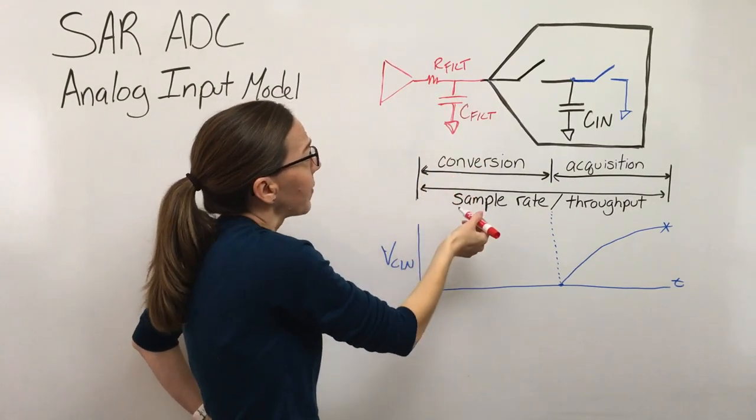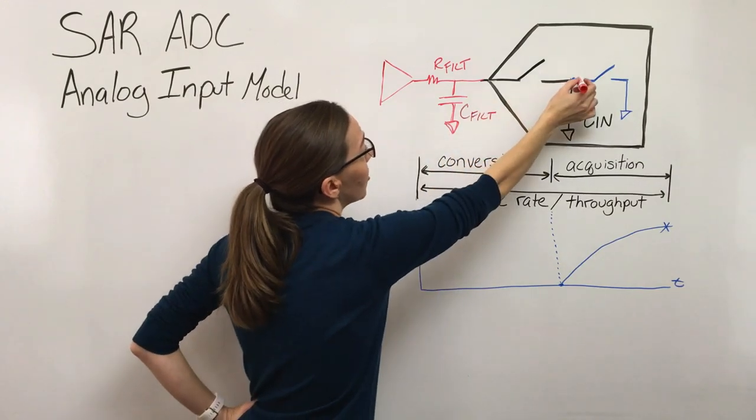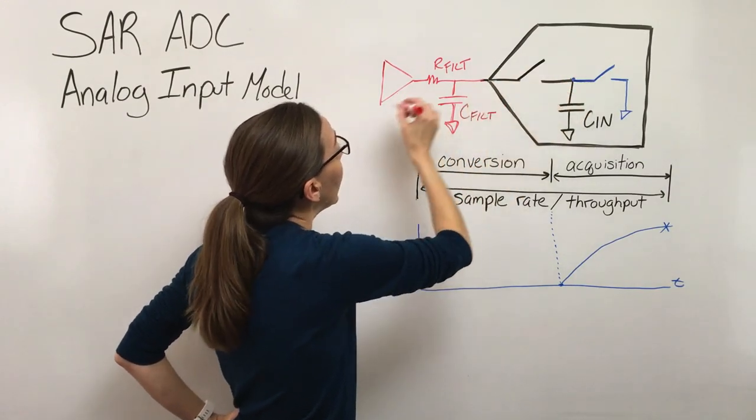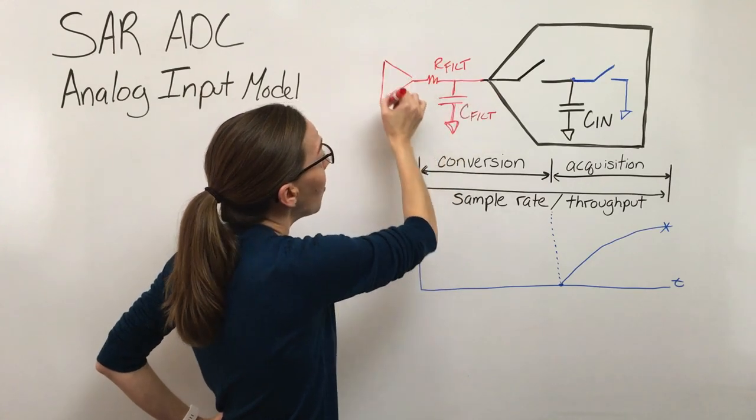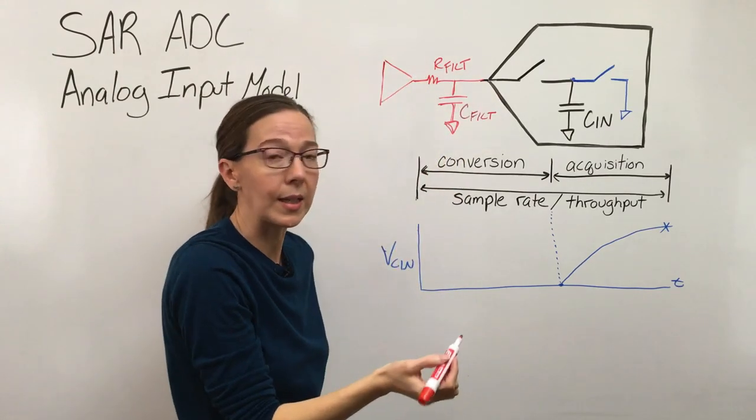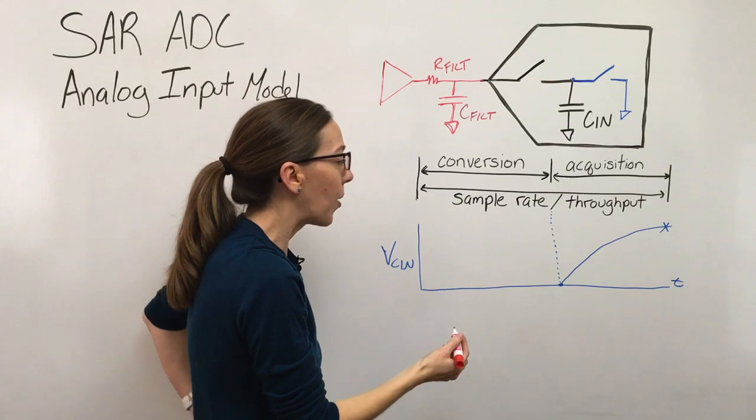circuit is we need to be able to quantify what this charge distribution is going to look like and what we need to select for these components to ensure that settling is going to occur in the time